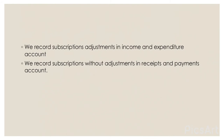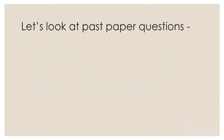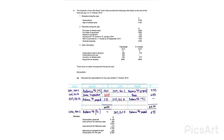Subscription adjustments — outstanding or prepaid — are recorded in the income and expenditure account, whereas the unadjusted subscriptions figure goes in the receipts and payments account. Now let's look at past paper questions. Question 1 requires us to prepare a subscriptions account for the year ended 31st October 2015. There are two options: the first method is the account format, and the second method is the calculation approach.